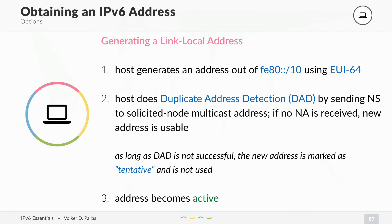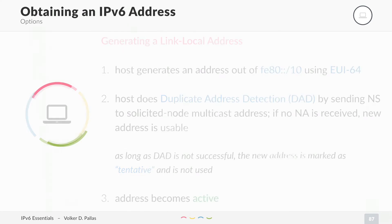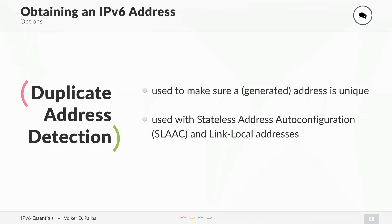As long as the DAD is not successful, the new address is marked as tentative and is not used for outgoing connections. If everything works well, you have generated an address, DAD is fine, and your address becomes active. Duplicate Address Detection is used to make sure that your generated address is unique, and also to make sure that your statically configured address is unique. It is always used once an interface comes up with a valid IPv6 address — used with stateless address auto-configuration and also with link-local addresses.